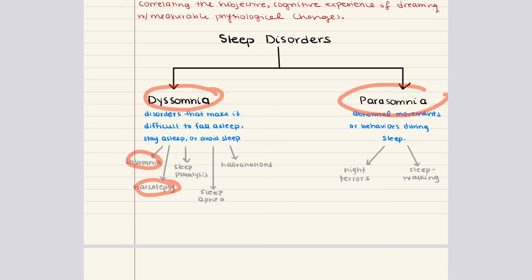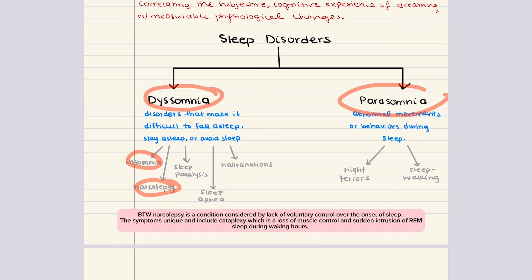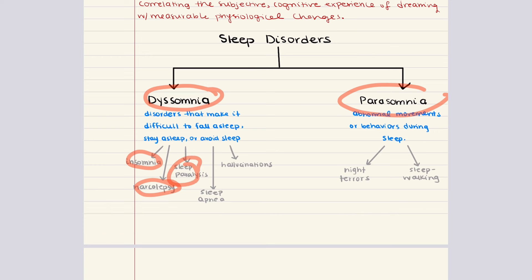Narcolepsy also falls under dyssomnia — a condition characterized by lack of voluntary control over the onset of sleep. Its symptoms include loss of muscle control and sudden intrusion of REM sleep during waking hours, usually caused by emotional triggers. Sleep paralysis is a sensation of being unable to move despite being awake. Hypnagogic hallucinations are hallucinations when going to sleep or waking up. Sleep apnea is characterized by the inability to properly breathe during sleep.